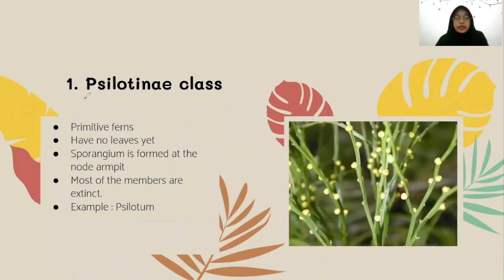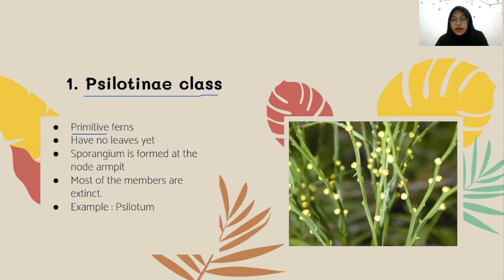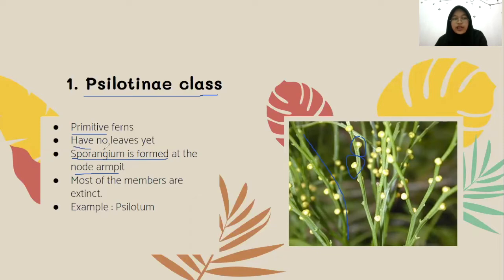Next, we will discuss the classification of ferns. First is Psilotinophyta, the primitive ferns. They have no leaves yet. An example is Psilotum nudum. Each yellow knob consists of three fused sporangia, and the sporangia are formed at the stem nodes. The stem lacks vascular tissue, which may have resulted from the evolutionary reduction of leaves. Most members of this group are extinct.